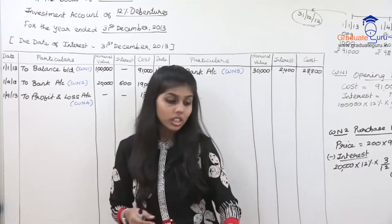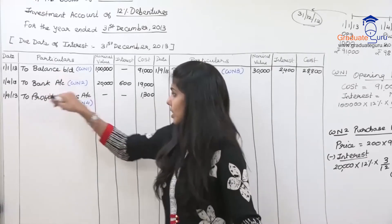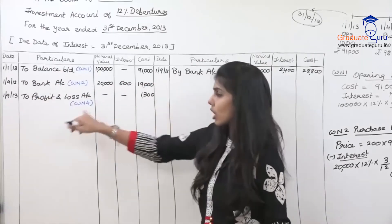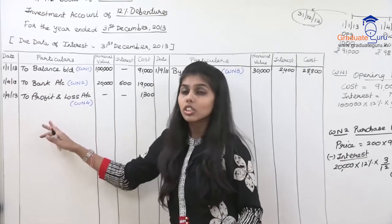So we have covered opening balance, purchase, and two sales along with the profit and loss on sale.